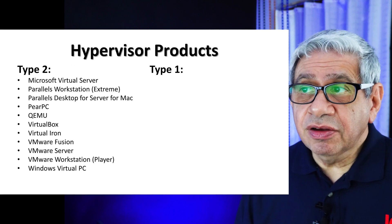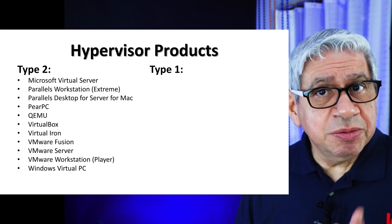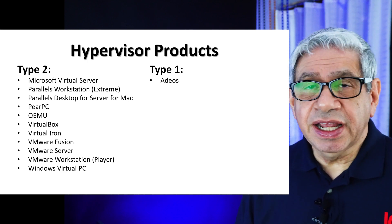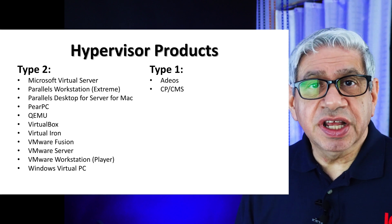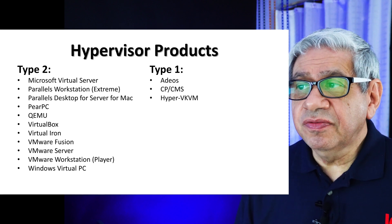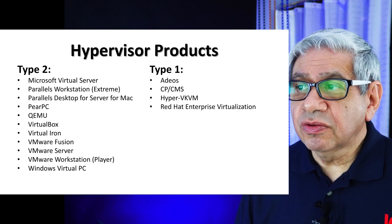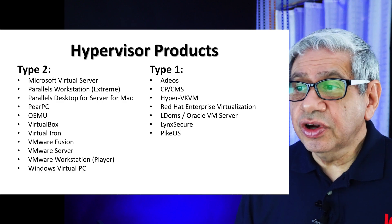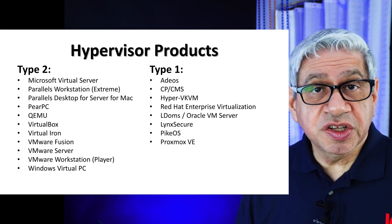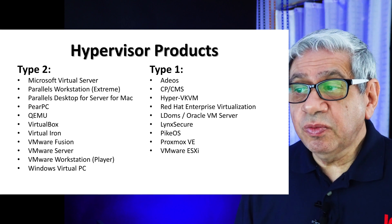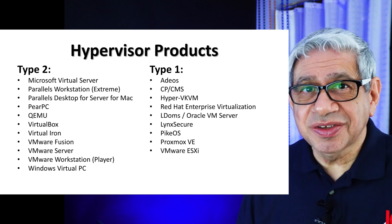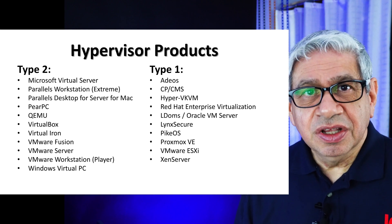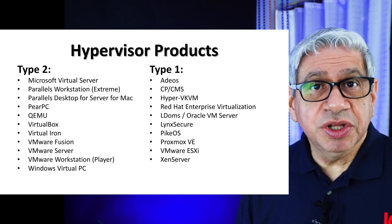For Type 1, we have a different set of products available. Some sound similar but are different products, even if they're from the same vendor. These include Adios, Linux, CP-CMS, Hyper-V, KVM, Red Hat Enterprise Virtualization, LDoms, Oracle VM Server, Links Secure, PykeOS, Proxmox VE — which is very popular — VMware ESXi — remember that one because the later part of this video is going to focus on it — and Xen Server. Those represent the most common Type 1s, but there are more.